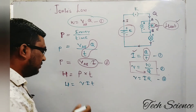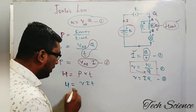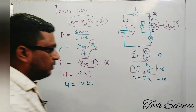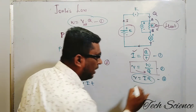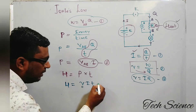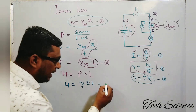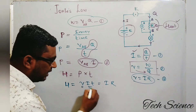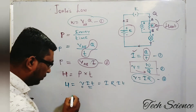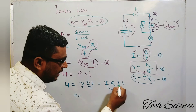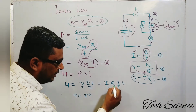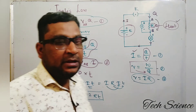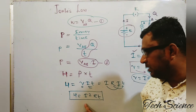This is the first formula: H = V × I × T. Now applying the third basic formula — Ohm's Law — where V = IR, we substitute V with IR into the expression. This gives H = (IR) × I × T. Simplifying, the two I's multiply to give I², so we get H = I² × R × T. This expression H = I²RT is what we call Joule's Law.